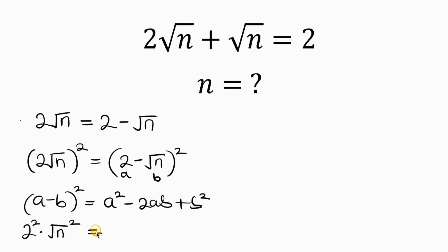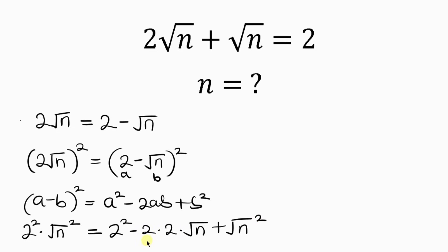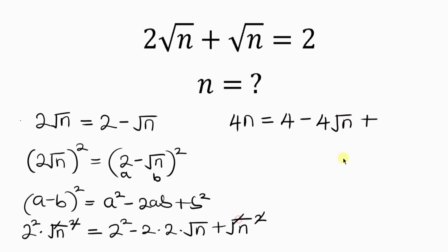Expanding the right hand side just like the formula: 2 squared minus 2 times a (which is 2) times b (which is the square root of n), plus b squared. So 2 squared is 4, the square cancels the square root leaving n, equal to 4 minus 4 root n plus n.